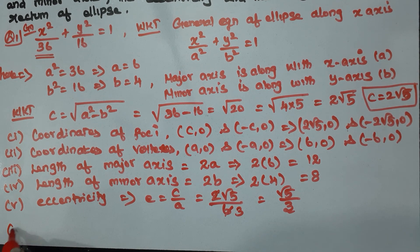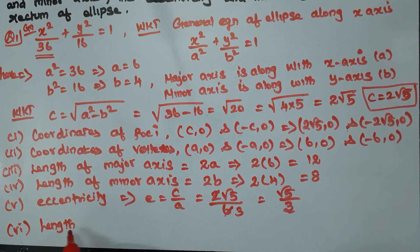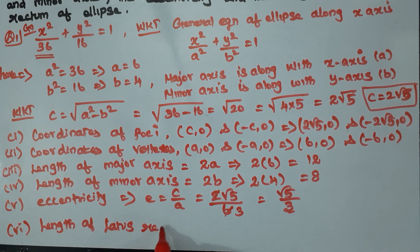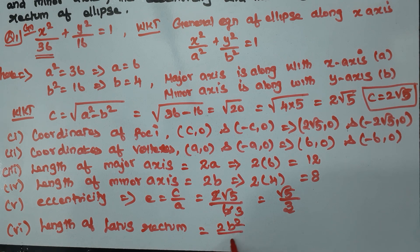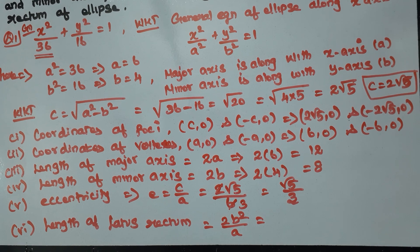Next, number 6 — last one: length of latus rectum. The formula for length of latus rectum is 2b² by a.